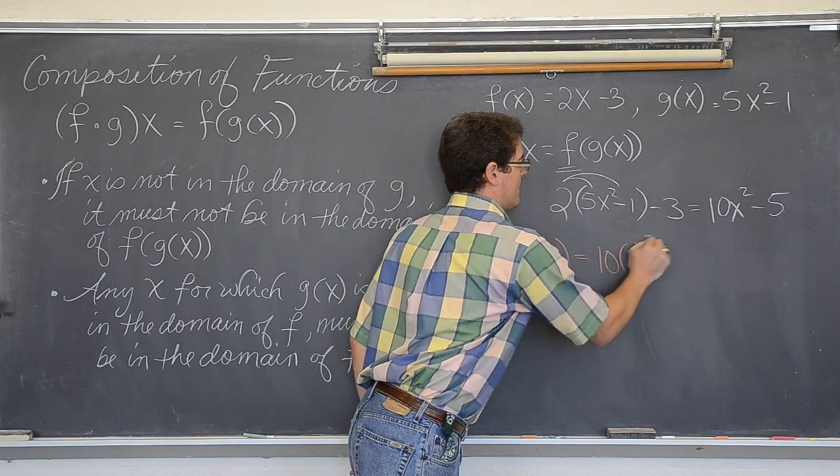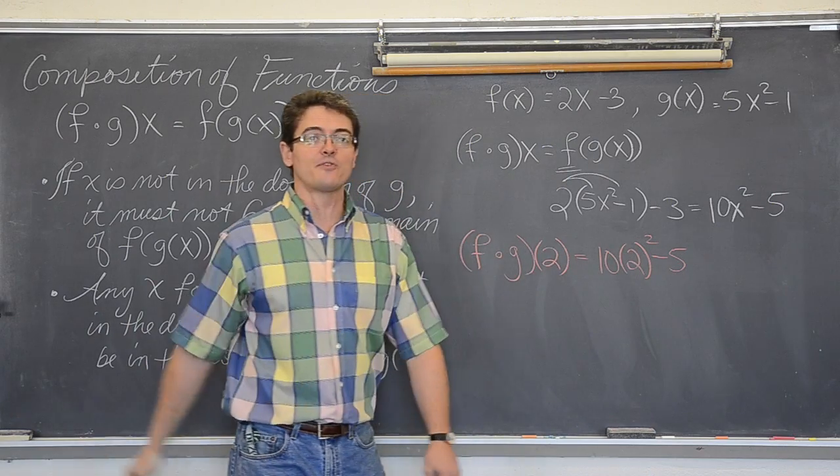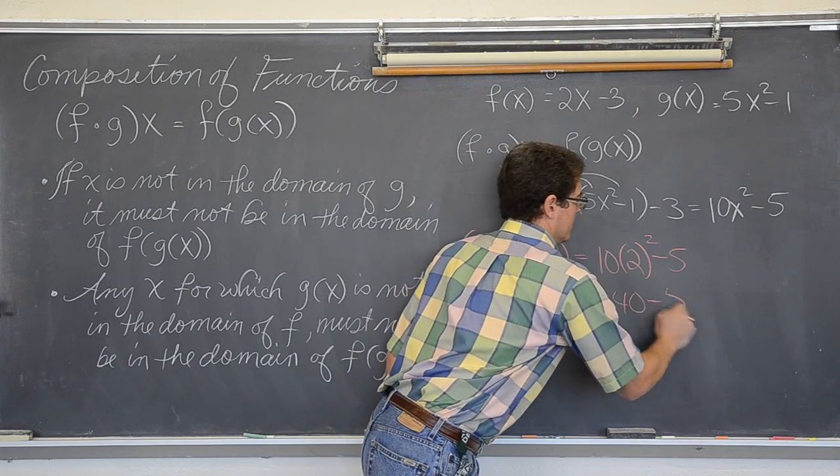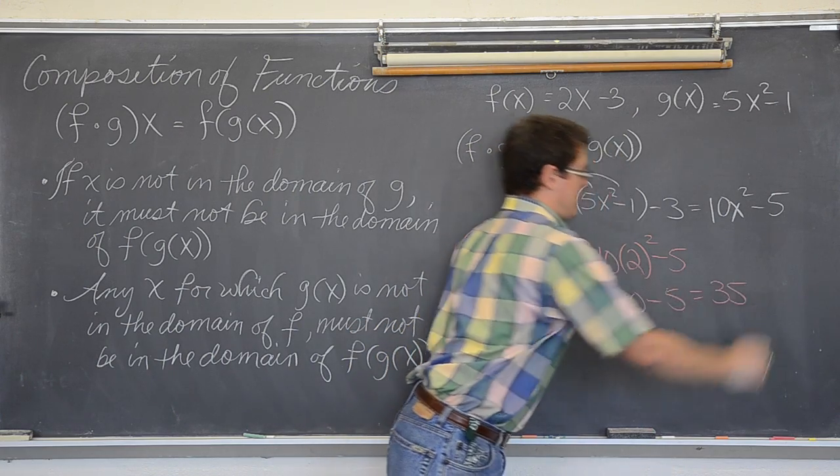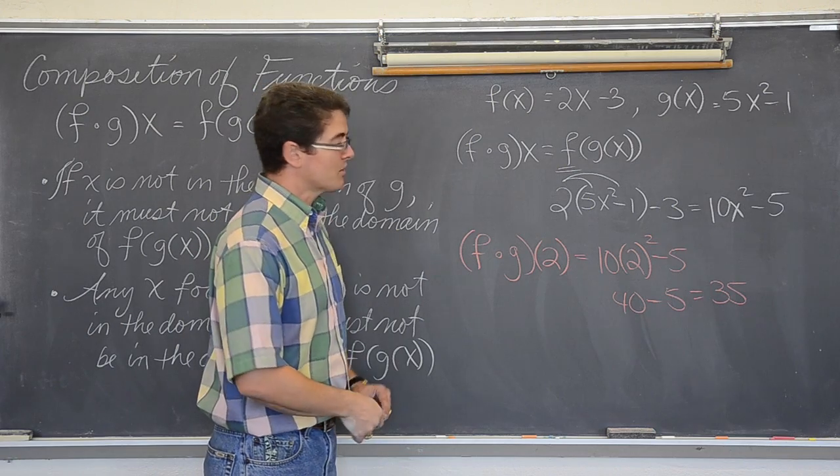So, 10 times 2 squared minus 5, that is 4. So, 10 times 4 is 40. And 40 minus 5 is 35. So, there you go. Just take out the x and plug in the number.